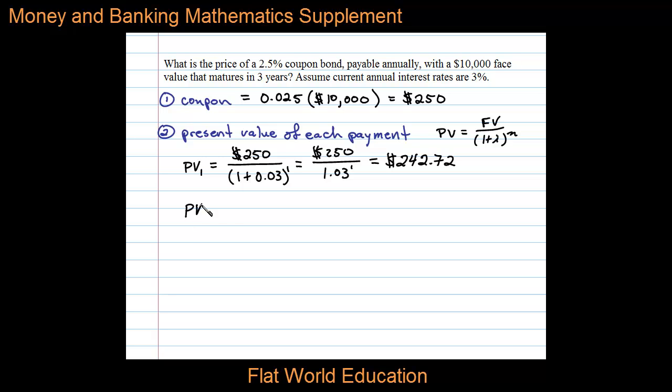Next, let's calculate the present value of the second payment in year two. That payment is $250, and we'll divide by (1 + i), where i = 0.03, but this time we'll raise it to the second power since there are two periods.